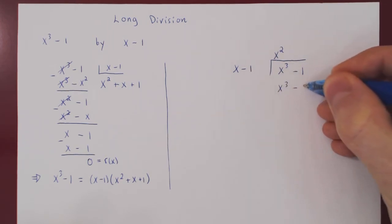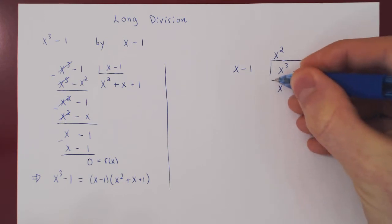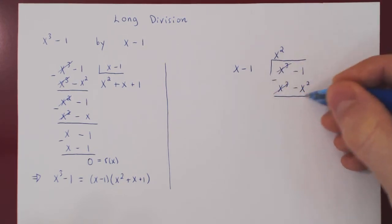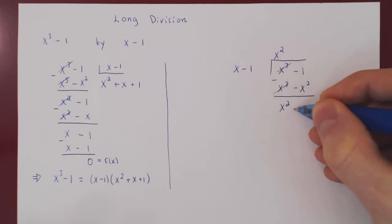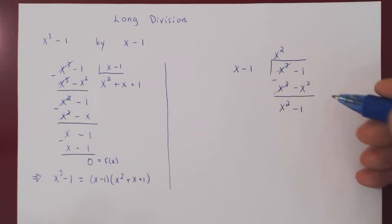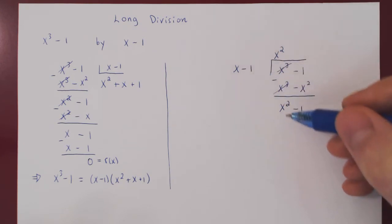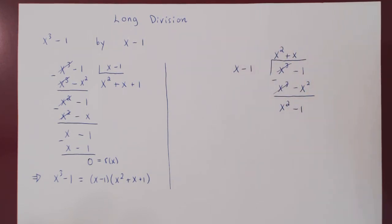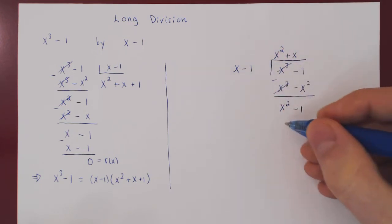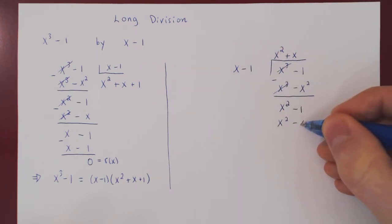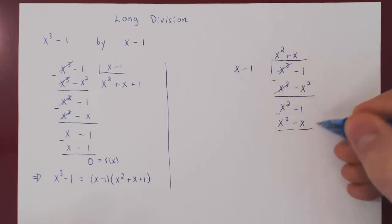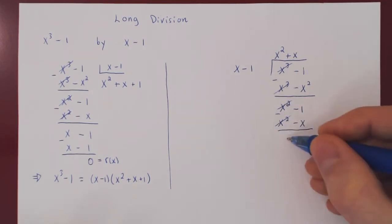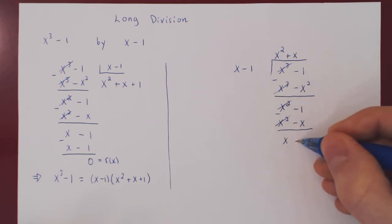We get x cubed minus x squared. We subtract — these cancel. As before we get negative negative x squared, so positive x squared minus 1. What times x is x squared? Plus x. So x times x minus 1 gives x squared minus x. We subtract: the x squared terms cancel, negative negative x is positive x, and we have a leftover of minus 1.